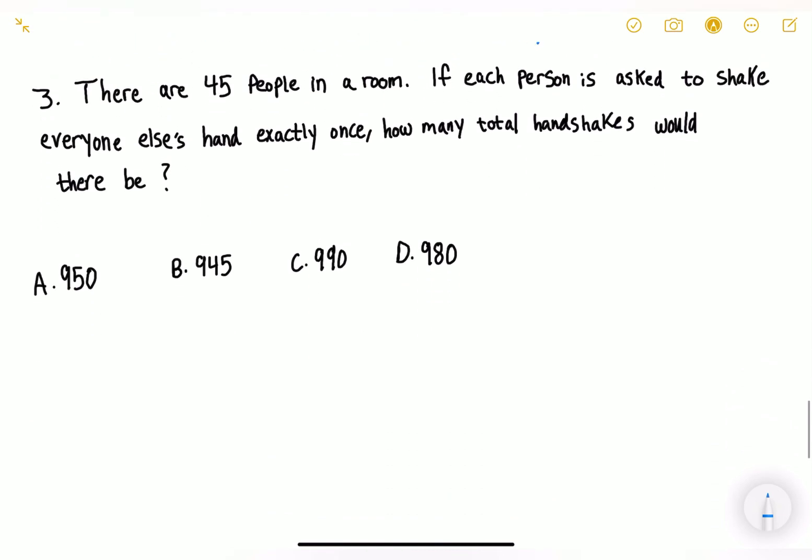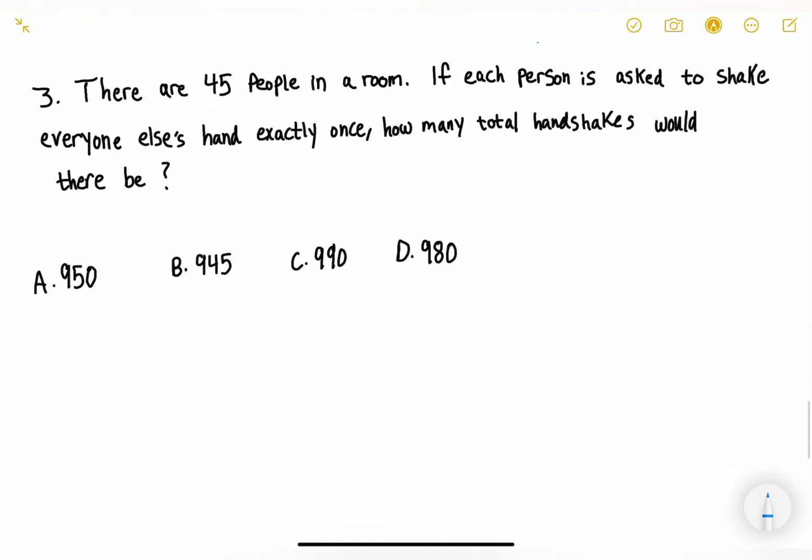Now let's move on to our third and final question. There are 45 people in a room. If each person is asked to shake everyone else's hand exactly once, how many total handshakes would there be? There's 45 people, so we'll simply apply the rule: 45 times 45 minus one, all divided by two.